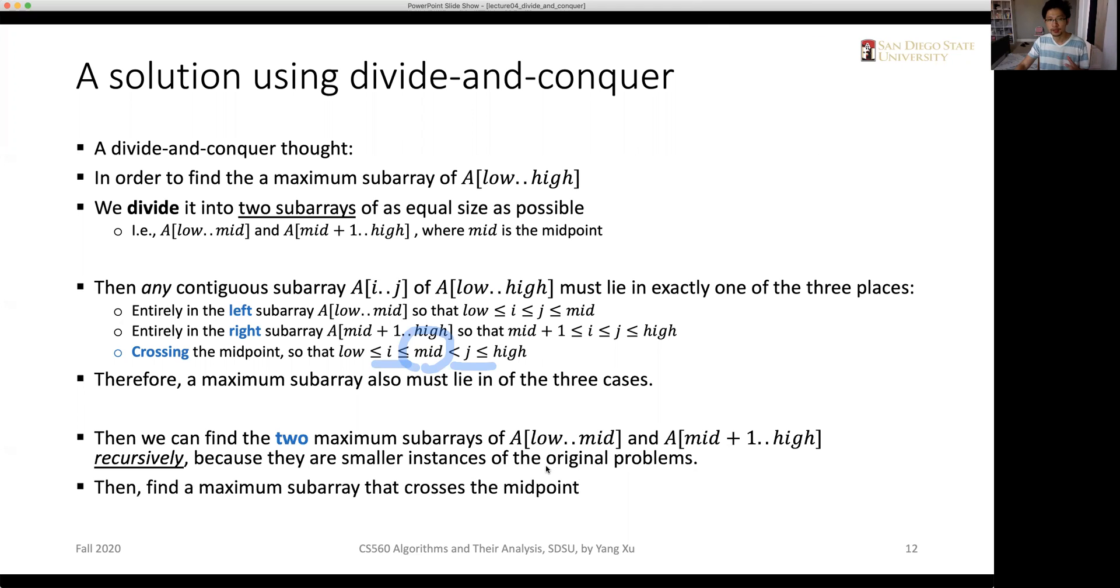But for the third case in which we are crossing the midpoint, we should use a different method. After we have found the maximum subarrays for all three cases, we just compare their value and return the subarray that has the largest summation. That's our basic thought.